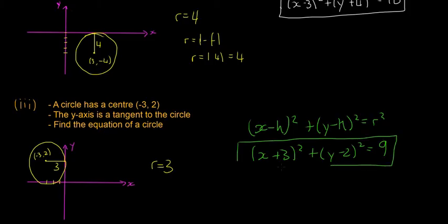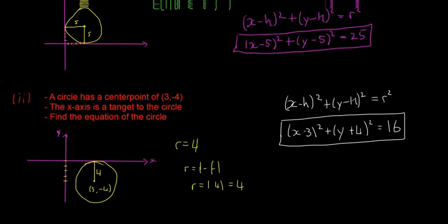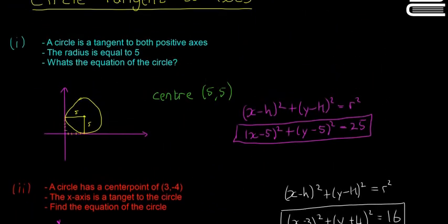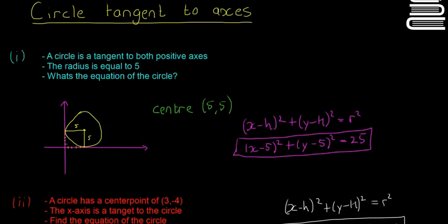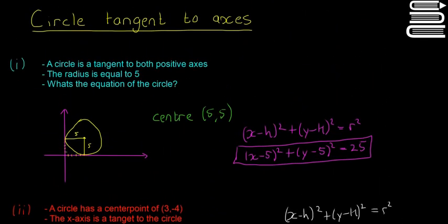So there we saw some examples of how we could use the information about a circle being a tangent to an axis to help us find the equation of that circle. We're going to do the same in the next video — just a more difficult example. Don't forget to like and subscribe. Hope you enjoyed the video.